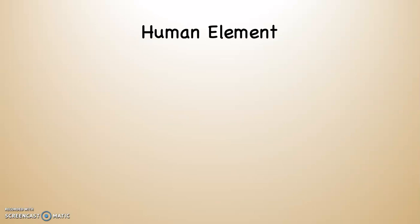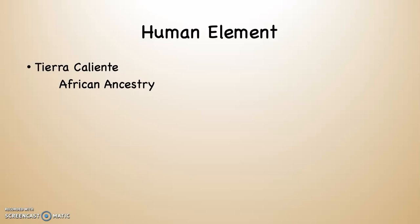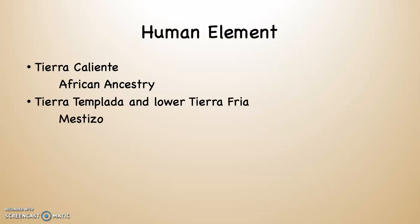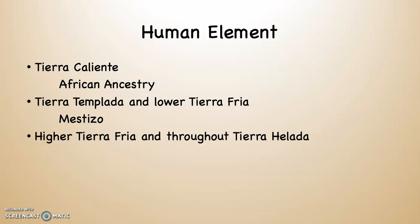There's also a human demographic element to altitudinal zonation. The tierra caliente tends to be dominated by people of African ancestry in countries where Africans were brought as slaves to work on those lower-elevation plantations. Moving up into the tierra templada and the lower parts of the fria, mestizos tend to predominate. In the tierra fria and throughout the helada, indigenous people tend to be the dominant population.